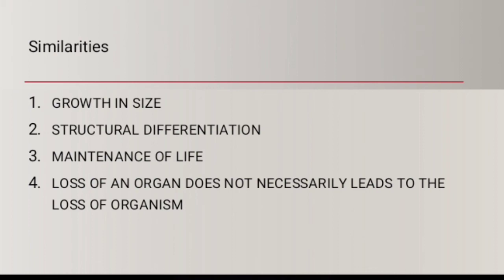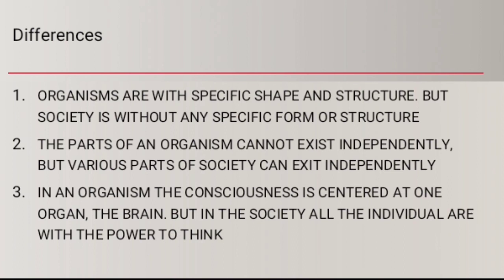The differences are as follows. First, organs have a specific shape and structure, but society is without any specific form or structure. Second, all the parts of an organism are interdependent, whereas parts of society can be more independent. Third, in an organism there is a center of consciousness — the brain — but in society, all individuals share consciousness; the power and structure is spread among all the people.